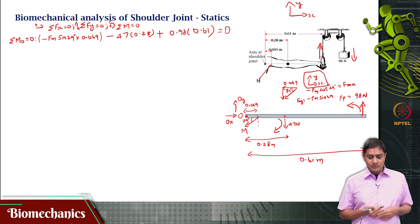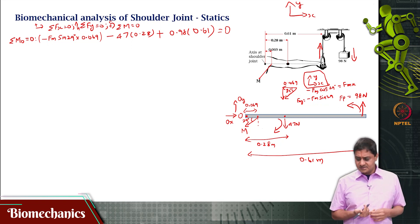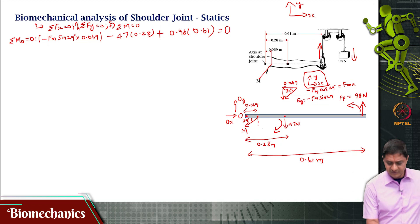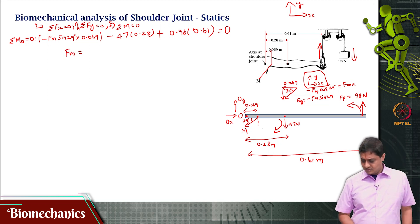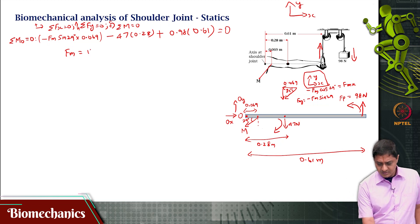This is one equation in one variable, simplify this. If you simplify this, you find the value of FM to be 1393.64 newtons.